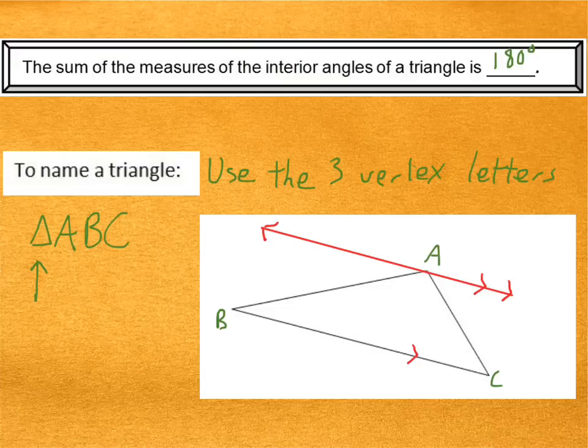Using that parallel line, we can figure out that the angles of the triangle add up to 180 degrees. So let's call this angle 1 here, and this angle 2, and this angle 3. Because these are parallel lines, I know angle 2 is congruent to this angle up here. Likewise, I know angle 3 is congruent to this angle up here.